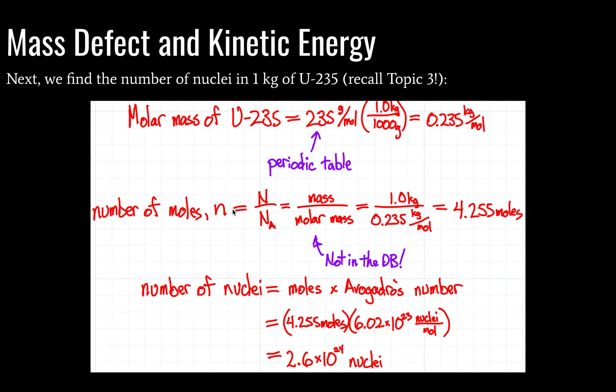In this case, number of moles is the small n. The large N would be the number of particles. Avogadro's number is given here. This is the formula that we need. And again, chemistry students, you're going to know all about this. Physics students, maybe, maybe not. Problematically, this is not in a data booklet. But because you're a good physics student, you would be able to find it through dimensional analysis of this unit.